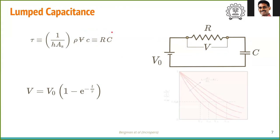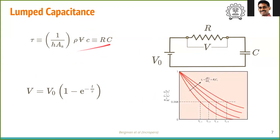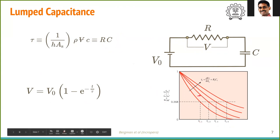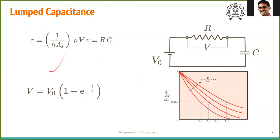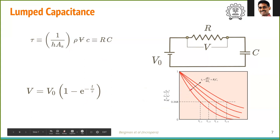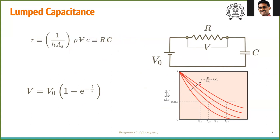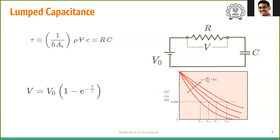This is called lumped capacitance because we assume the entire body is at a single (lumped) temperature. When τ increases — by increasing either the capacitance or the resistance — the dimensionless temperature takes longer to decay to zero. The curve of dimensionless temperature versus time shifts upward as the time constant increases.